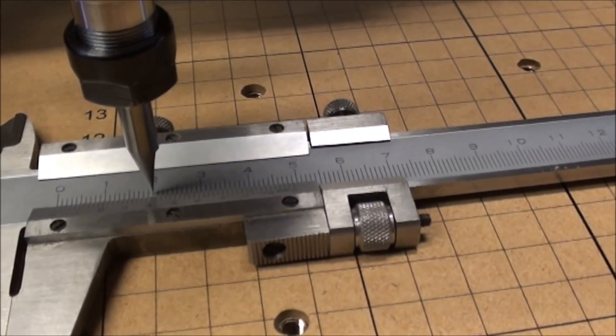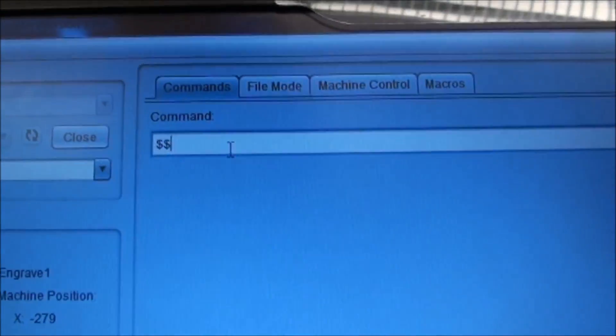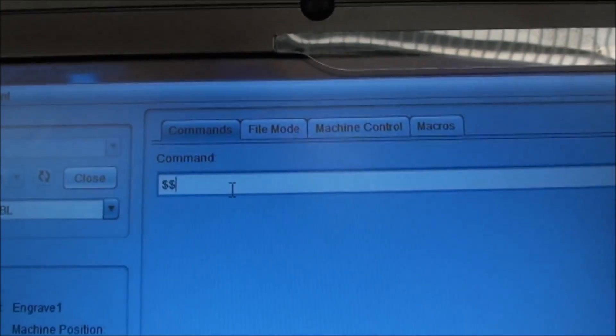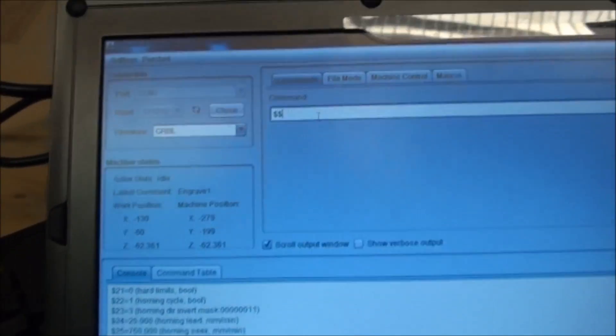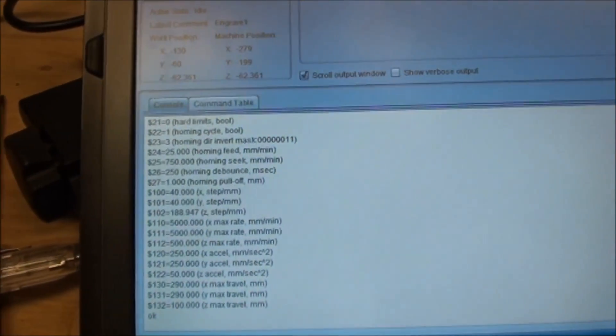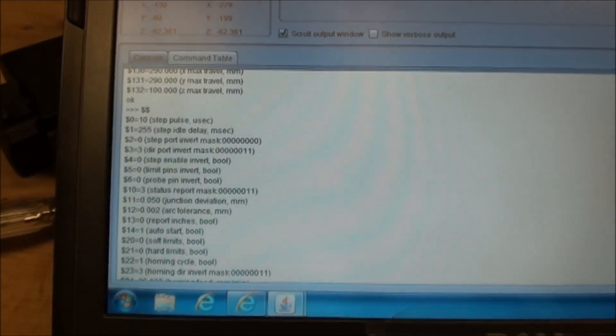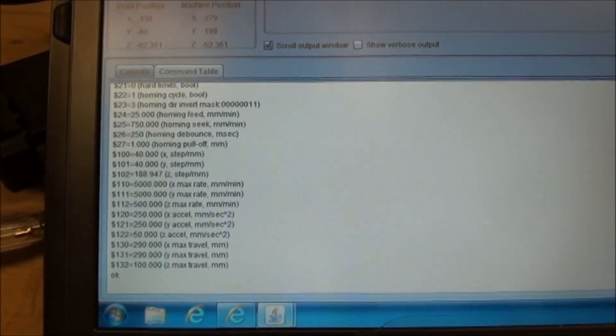If you want to access the parameters, you can issue a double dollar command and then you will get a readout from the machine, from the Grbl sheet. There you have all the different parameters starting from dollar one all the way to dollar one three two.